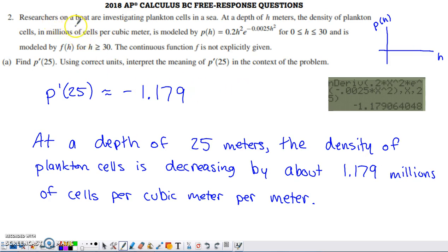It's talking about researchers on a boat investigating plankton cells at sea. At a depth of h meters, the density of the plankton cells, measured in millions of cells per cubic meter, is modeled by this crazy-looking function. So p is some function of h.